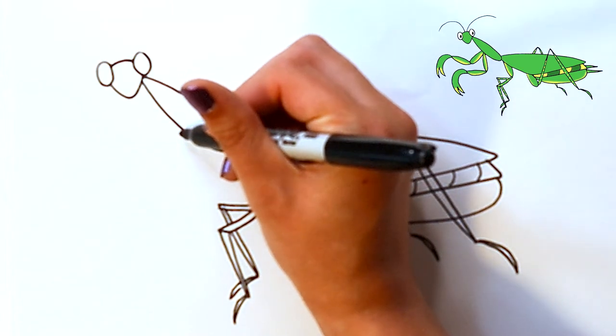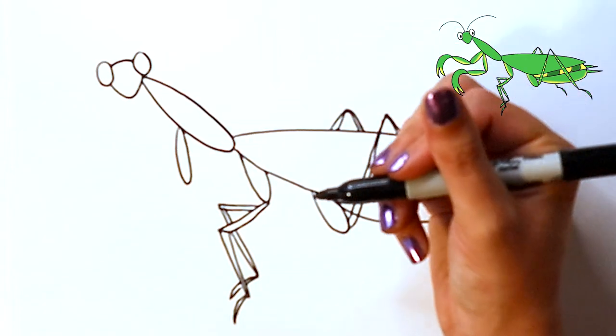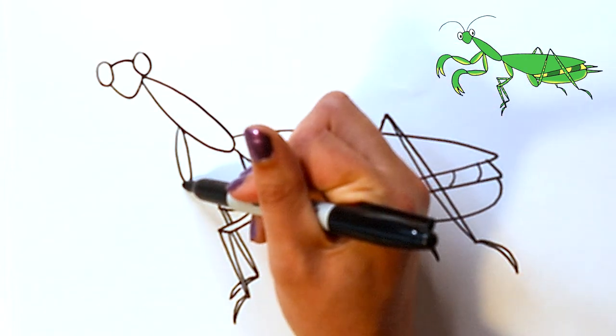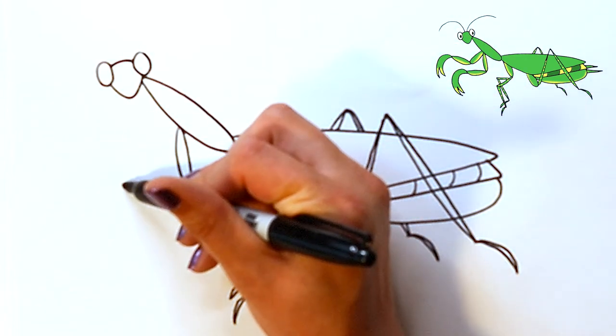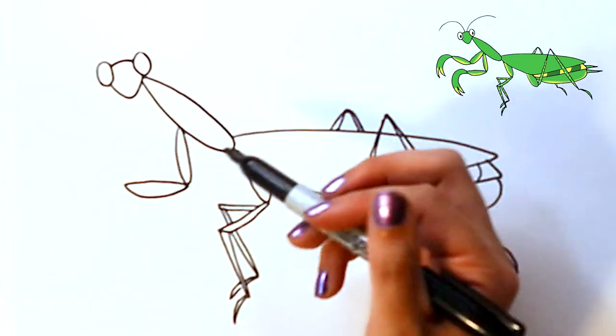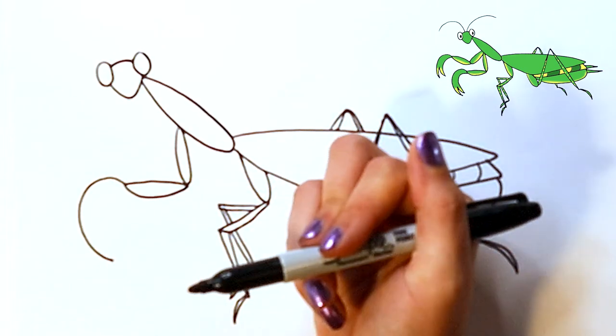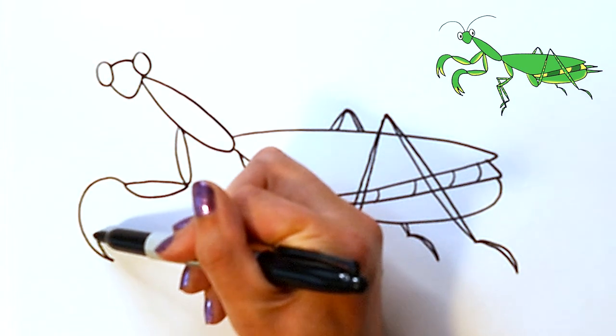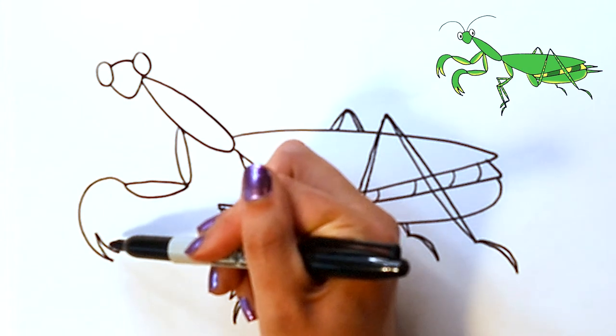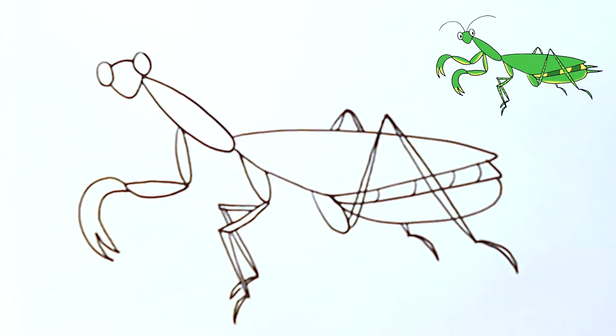And now let's do those big claws in front that are really impressive. So I'm going to do this one here that's in front first. Oval, kind of another oval shape. You can have it be a little pointed on the ends. And then those big claws, it's going to curve over like that. I'm going to do kind of a curved V shape, and then it kind of just curves back up to connect there.